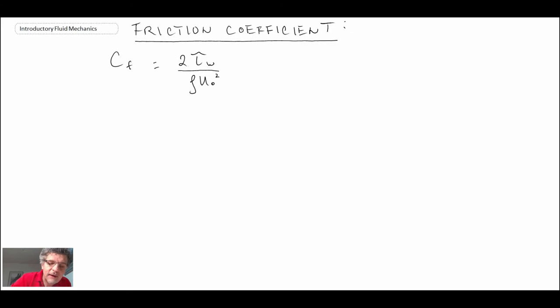What he did is he substituted the value for the wall shear stress that he got from the control volume analysis, and he also substituted in here his quadratic velocity profile. In doing that, he came up with this for the friction coefficient.